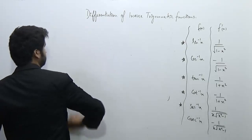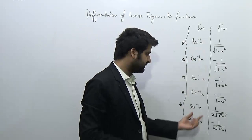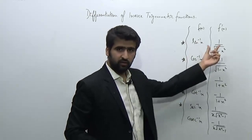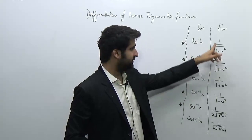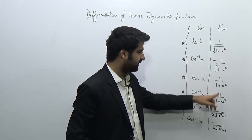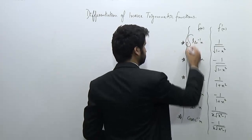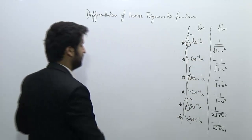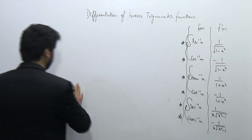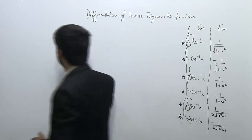You only need to remember the differentiation of sin⁻¹x, tan⁻¹x, and sec⁻¹x. The other three are paired: cos⁻¹x has the same formula as sin⁻¹x but with a minus sign; cot⁻¹x pairs with tan⁻¹x; and cosec⁻¹x pairs with sec⁻¹x — all three pairs differ only in sign.